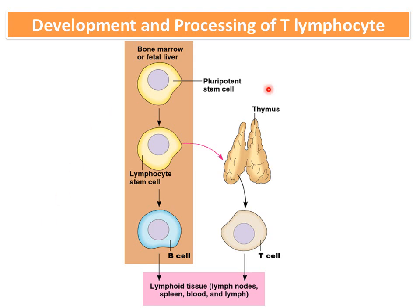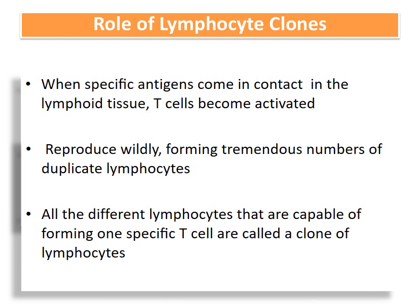All processing in the thymus occurs before birth or a few months after birth. These T cells then pass into the circulation and are distributed throughout the body via blood and lymph, lodging in lymph nodes until they come into contact with a specific antigen. When that antigen is encountered in the lymphoid tissue, T cells become activated and reproduce wildly, forming large numbers of duplicate lymphocytes — these are called clones of that lymphocyte.